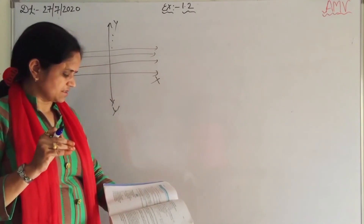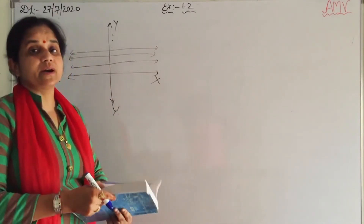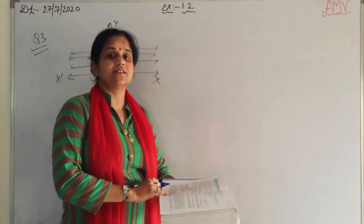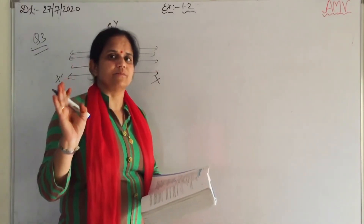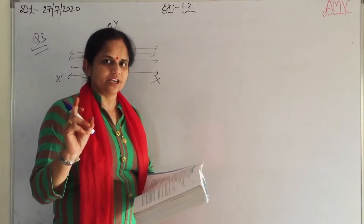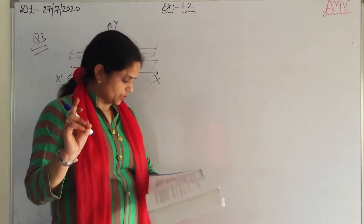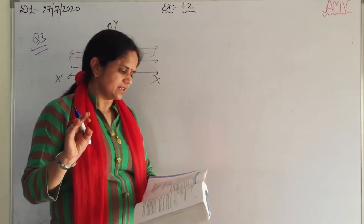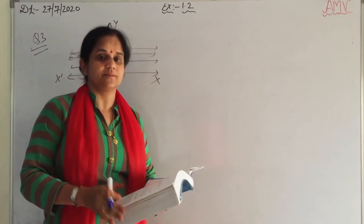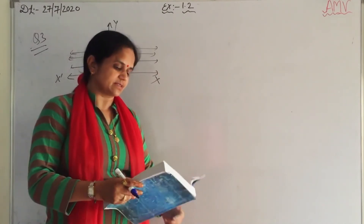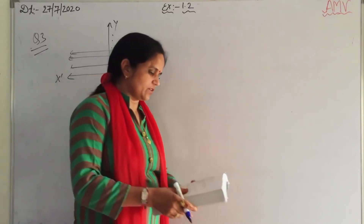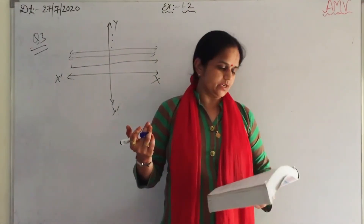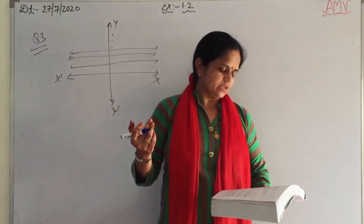Next: set of numbers which are multiples of 5. These are infinite numbers — not a definite count. So it is an infinite set. Set of animals living on earth — it is a finite set.